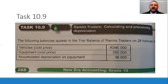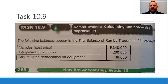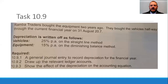Some of you might be thinking: will there ever be a balance for depreciation? The answer is no — depreciation itself is closed off each year, so there's no carrying value for depreciation from year to year. But the accumulated depreciation will have a value that continues into the next financial year. In this question, depreciation on vehicles is 25% per annum on the straight-line method, and equipment is 15% per annum on the diminishing balance method.